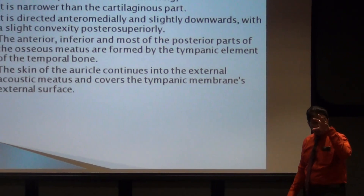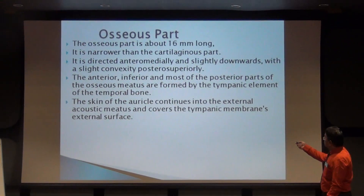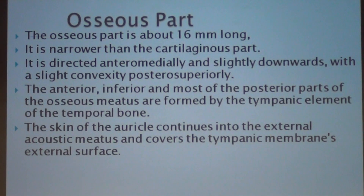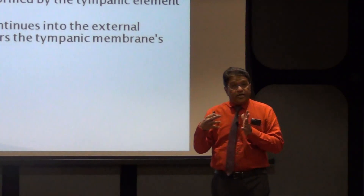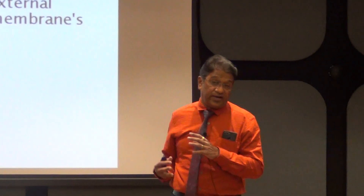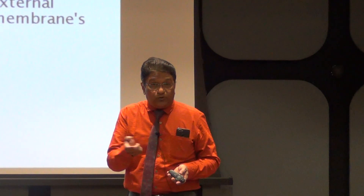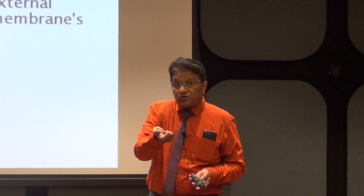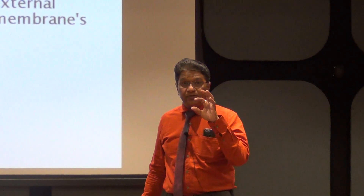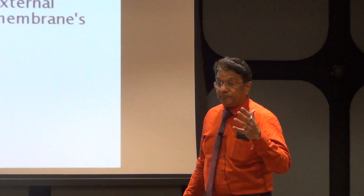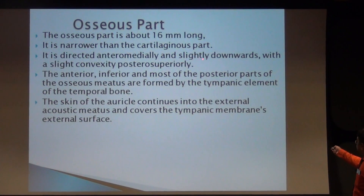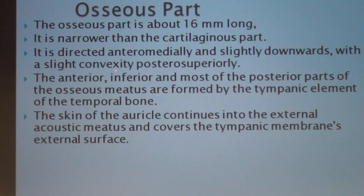The osseous part is the medial two-thirds, 16 mm long. It is narrower than the cartilaginous part - as the external acoustic meatus goes medially, it becomes narrower and narrower. This helps sound waves get magnified, similar to how pressing the mouth of a water tube increases the force of the water. The osseous part is directed anteromedially and slightly downwards, with slight convexity posterosuperiorly.